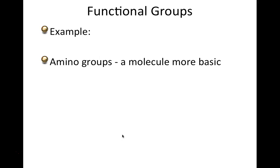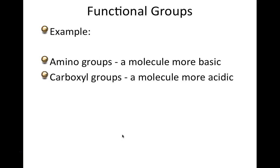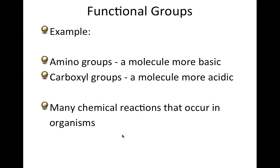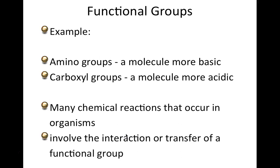Some examples of functional groups: an amino group on a molecule automatically tells us that molecule will have alkaline or basic pH properties. On the other hand, a carboxyl group on a molecule tells us it will have acidic pH characteristics. Simply seeing those functional groups as part of a molecule's structure gives us a lot of information about its pH. Many chemical reactions occur because of the type of functional group attached — we see interactions and exchanges of electrons or atoms at those sites.